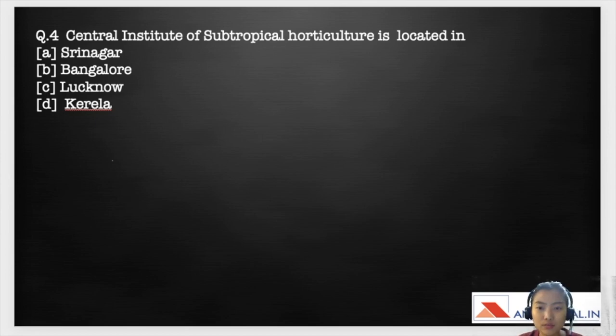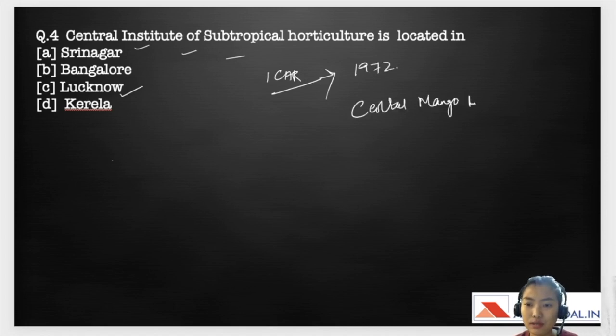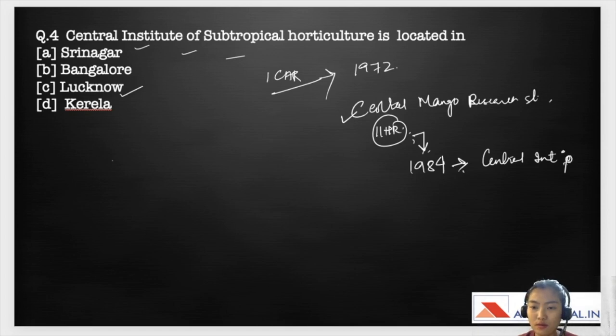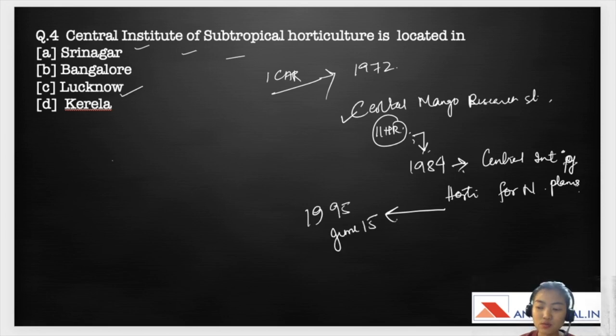The fourth question is Central Institute of Subtropical Horticulture is located in which of these? Options are Srinagar, Bangalore, Lucknow, Kerala. The correct answer here is Lucknow. The Central Institute of Subtropical, this is under ICAR. It was first set up as a Central Mango Research Station in 1972, which acted as a research station for IIHR. It was upgraded as a full-fledged institute in 1984 and it was named as Central Institute of Horticulture for Northern Plains. And after in 1995, June 15, it was renamed as the Central Institute of Subtropical Horticulture.